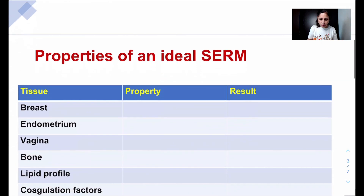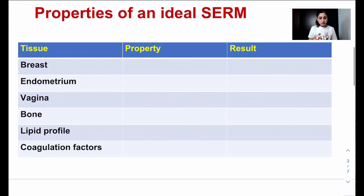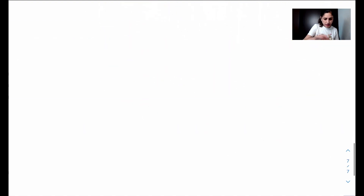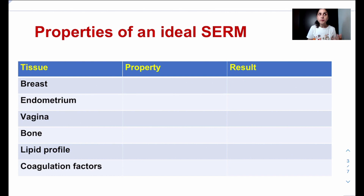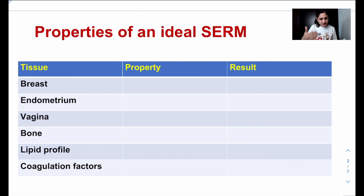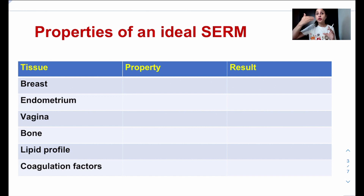Let's look at the properties of an ideal SERM. To know this, you first need to know the effects of estrogen on various organs. Once you know those effects, you can determine whether a particular estrogen effect is good or bad. For example, on bone, estrogen helps in bone formation — that's a good effect. So an ideal SERM should have an estrogen-agonistic action on bone.